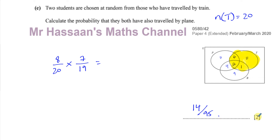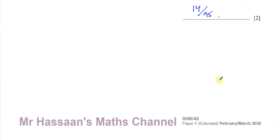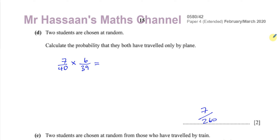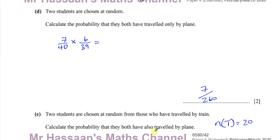That answers the whole of question 9. Any other questions from this paper you want to see, you'll find in the playlist. Questions on set notation and Venn diagrams, and probability, will appear in those playlists. You can subscribe to my channel by clicking the link. Thank you for watching — I hope you understood and I hope to see you soon.